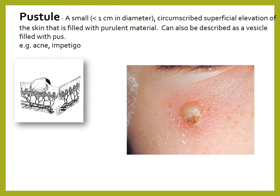A pustule is a small (generally less than 1 cm in diameter) circumscribed superficial elevation of the skin filled with purulent material — essentially a vesicle filled with pus. Examples are acne or impetigo, caused by bacterial infection of the skin.